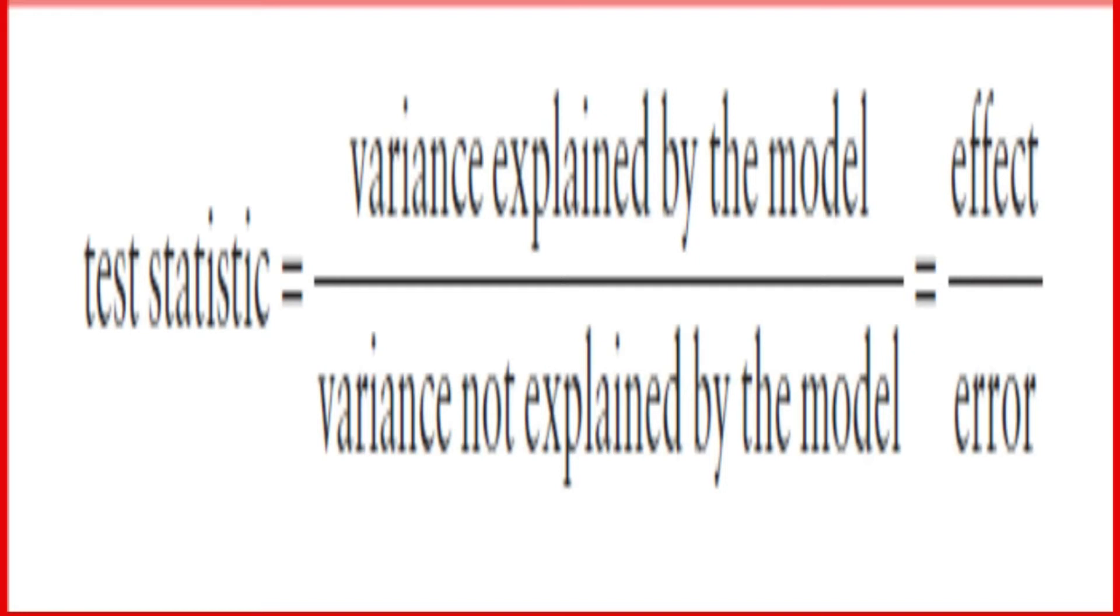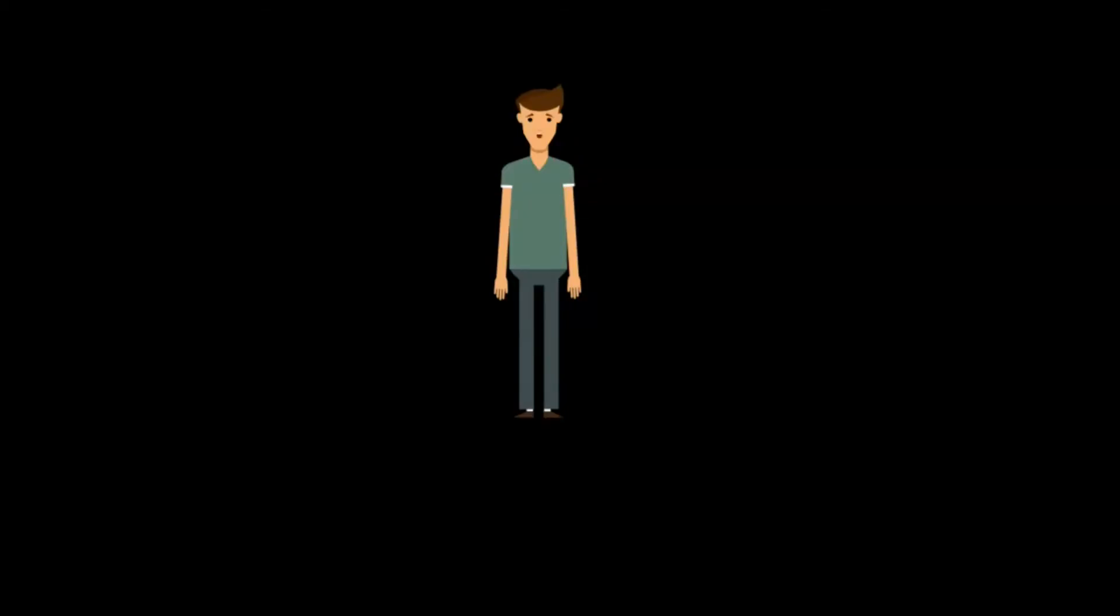Now I understand the meaning of t, F, and chi-square, because these are often faced in our statistical courses. I understand that these all represent the same thing: the amount of variance explained by the model we have fitted to the data, compared to the variance that cannot be explained by the model.